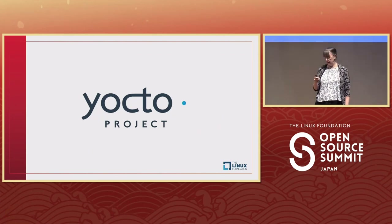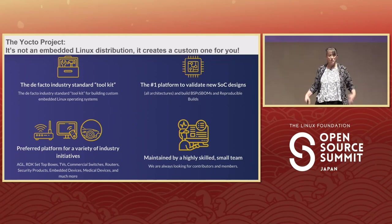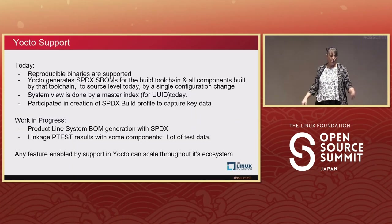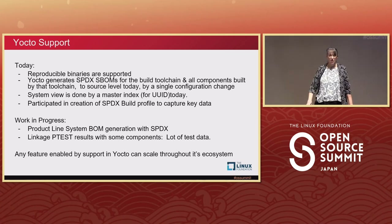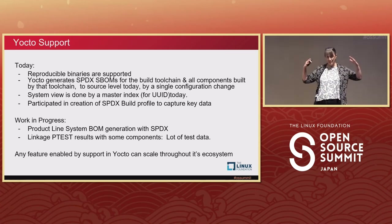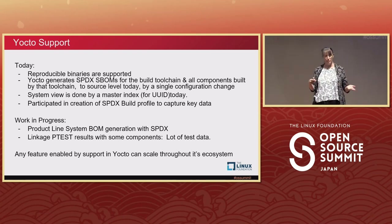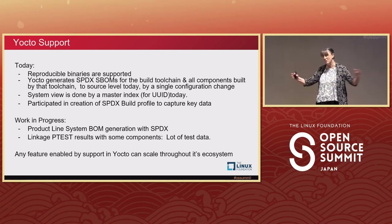First, Yocto. Yocto is not an embedded Linux distribution — it creates one for you. It creates your toolchain, generates an S-BOM of it, and when that toolchain runs to build the rest of the pieces, it creates S-BOMs for those pieces. Today in Yocto, reproducible binaries are supported, which is one of the key things we're going to need. Yocto generates SPDX S-BOMs by just turning on an option — that's all you need to do. They've been working with our community on the build-level profile, and there's product line BOM generation with SPDX being prototyped. The nice thing about working with Yocto is any feature we work on there scales throughout the entire ecosystem.